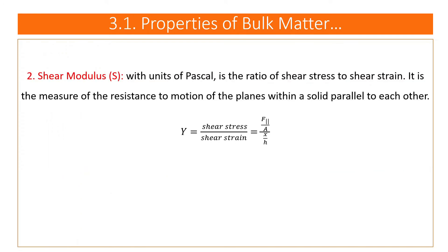The next type is shear modulus, represented with units of Pascal — that is, Newton per meter squared. It is the ratio of shear stress to shear strain, and it is a measure of resistance to the motion of layers within a solid past each other. The formula is: shear modulus = shear stress / shear strain.